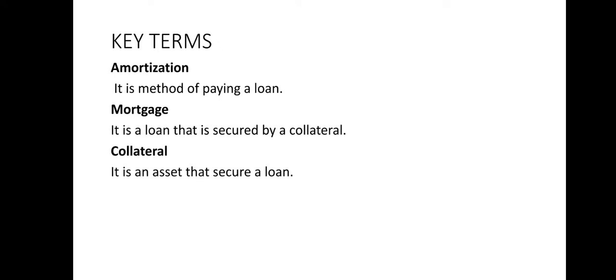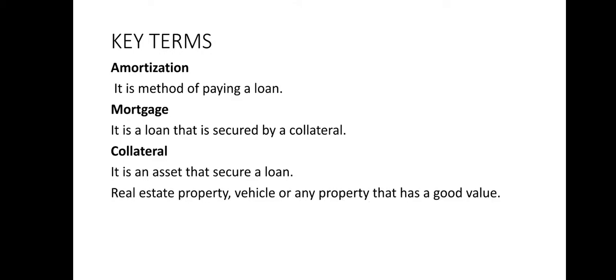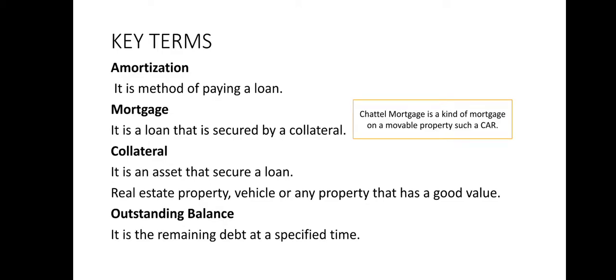Now let's have amortization and mortgage. Let's define some key terms for this topic. Amortization is a method of paying a loan. Mortgage is a loan that is secured by collateral. Collateral is an asset that secures a loan — for example, real estate property, vehicle, or any property that has a good value. Outstanding balance is the remaining debt at a specified time, or the remaining amount to be paid. We also have chattel mortgage, which is a kind of mortgage on a movable property such as a car.